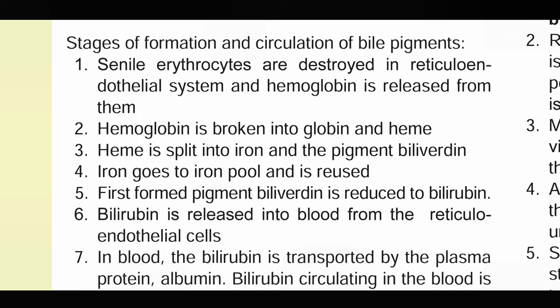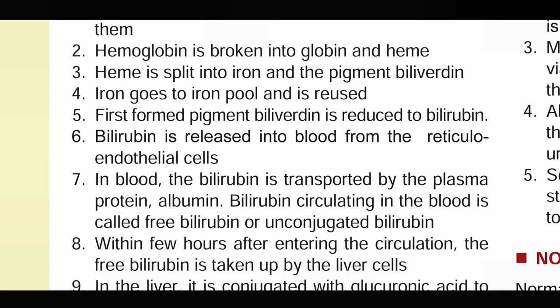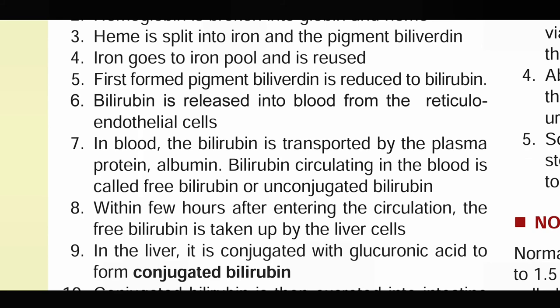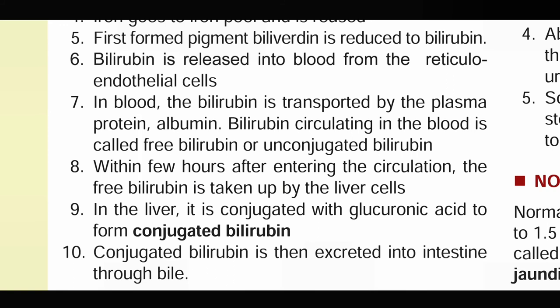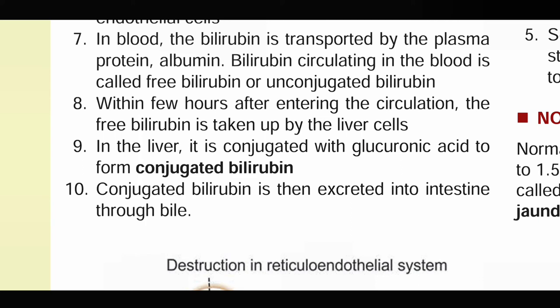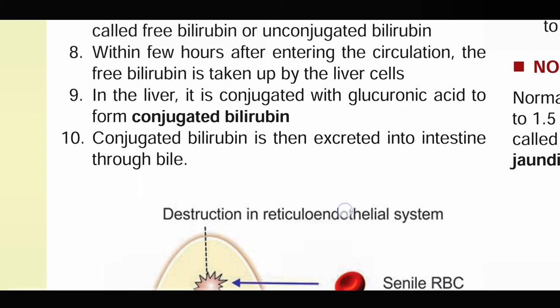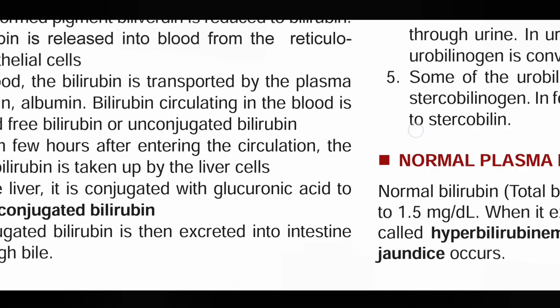Revision: Senile erythrocytes — RBCs — are destroyed in the reticuloendothelial system and hemoglobin is released. Hemoglobin is broken down into globin and heme. Globin is reused; heme is split into iron and biliverdin. Iron is reused. Biliverdin is reduced to bilirubin, which is released into the blood as free or unconjugated bilirubin, transported by the plasma protein albumin. Free bilirubin is taken up by the liver cell and conjugated with glucuronic acid to form conjugated bilirubin, which is then excreted into the intestine through bile.